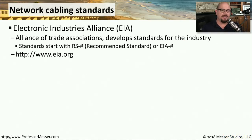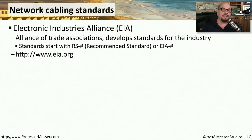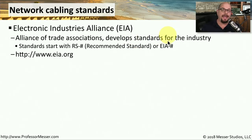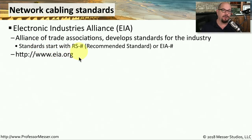Cabling is very standardized, and the standards for cabling come from many different organizations. One of these organizations is the Electronic Industries Alliance, or the EIA. This is an alliance of trade organizations, and they create standards for the entire industry. You'll see their standards usually start with an RS, which stands for recommended standard, or it has an EIA at the beginning. You can find all of their information at www.eia.org.